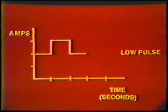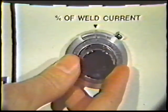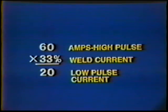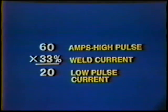The low pulse current is the current level at which the weld metal begins to solidify. Usually this control is set at a percentage value of the high pulse current. For example, if the high pulse current is set at 60 amps and the low pulse current setting is adjusted for 33%, the low pulse current would be 20 amps — or 33% of 60. The low pulse current is normally set in the approximate range of 25 to 50% of the high current. Usually a setting that is sufficient to maintain the arc during the low pulse time is all that is required.